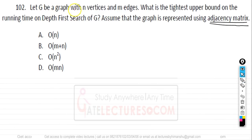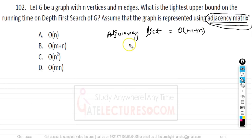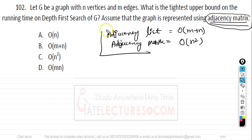Question number 102. A graph G has N vertices and M edges. What is the tightest upper bound on the running time of DFS when the graph is represented using an adjacency matrix? Using adjacency list, DFS takes O(M+N). But with an adjacency matrix, DFS requires O(N²) time. So O(N²) is the right answer.